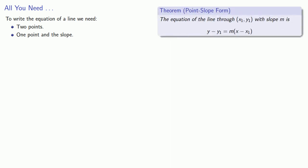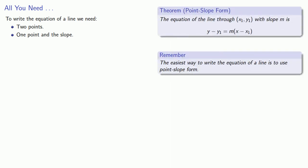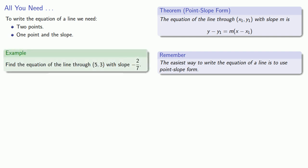And it's worth remembering that the point-slope form is the easiest way to write the equation of a line. So if I want to find the equation of the line through a given point with a given slope, we can immediately write down the equation in point-slope form.